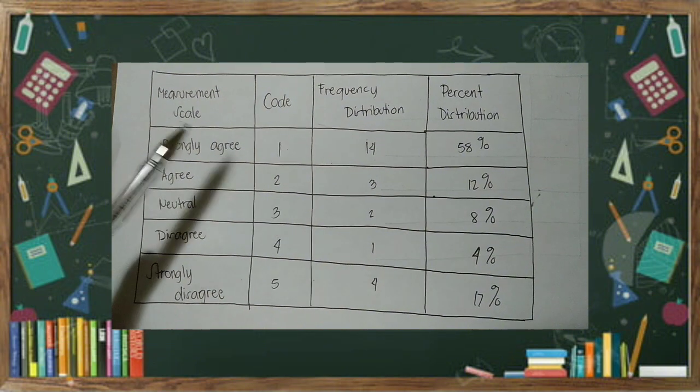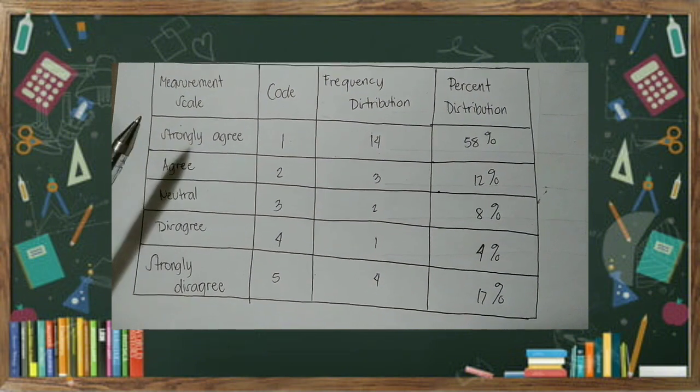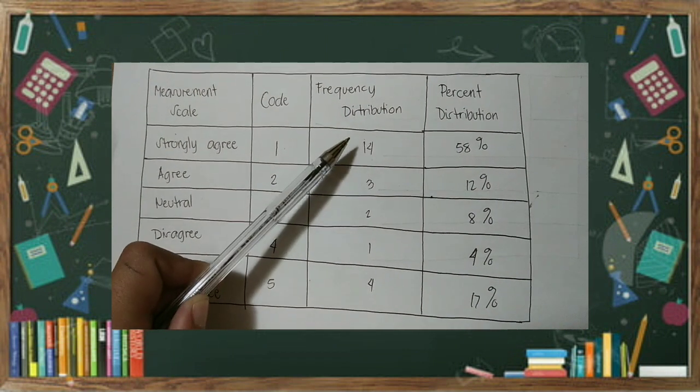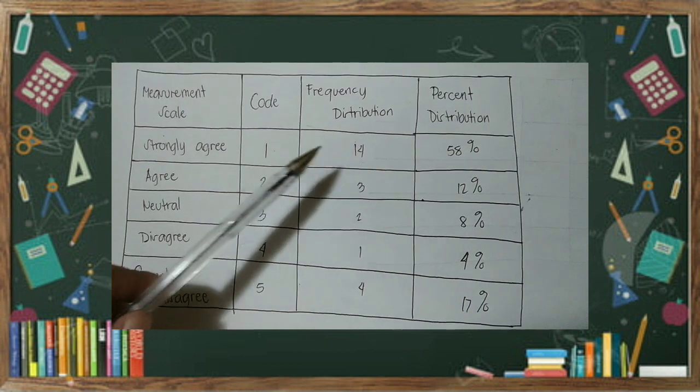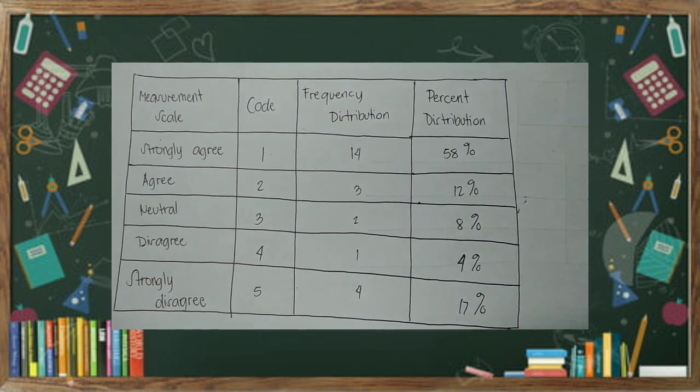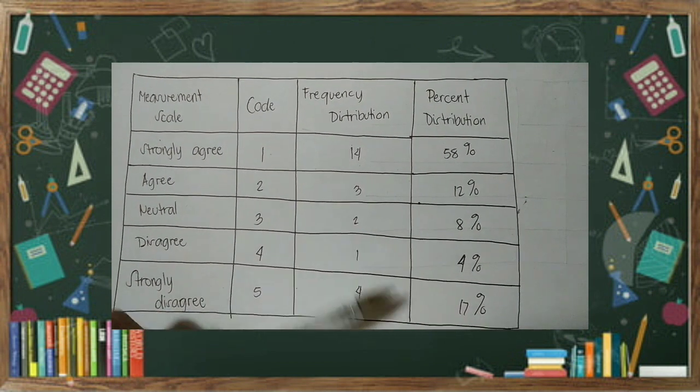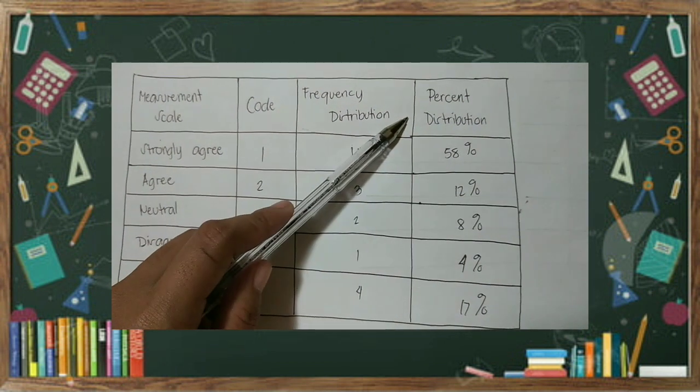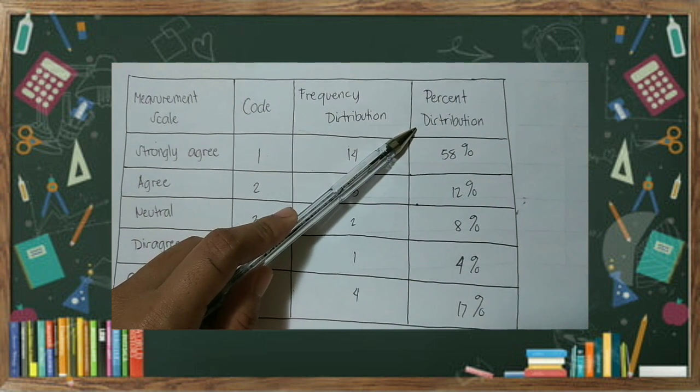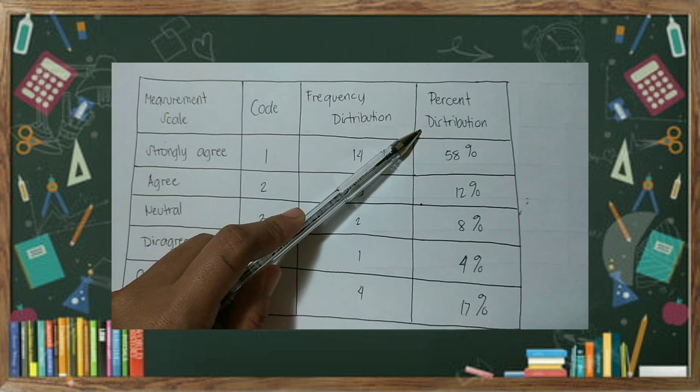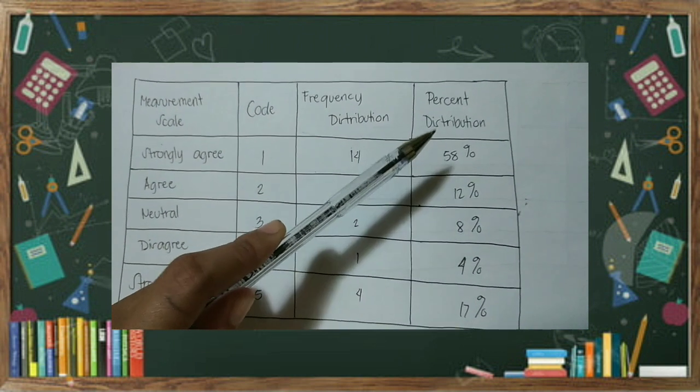How many of them strongly agreed? Let's say, 14 answers strongly agree, so we're going to write the frequency of answers. And then, you're going to write the percentage distribution out of the total sample size. How many percent answered strongly agree.